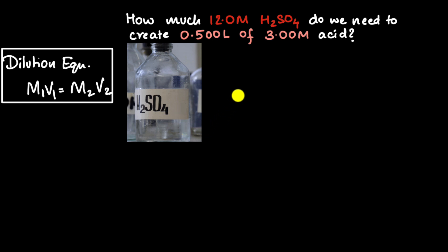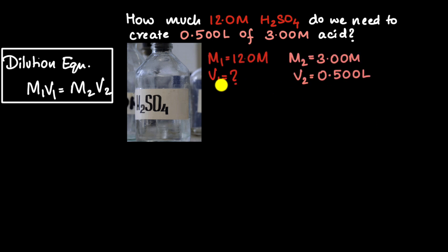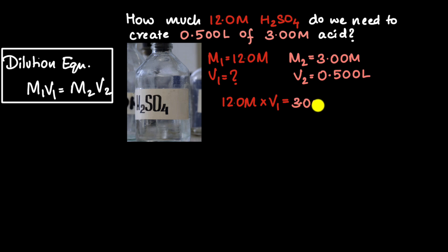Using the dilution equation, M1 is the molarity of the concentrated H₂SO₄, V1 is the volume of the concentrated H₂SO₄ — that's what we need to find. M2 is the molarity of the dilute solution, and V2 is the volume of the dilute solution. We're given M1, M2, and V2, and we need to find V1. Plugging in: M1V1 = M2V2 → 12 × V1 = 3.00 × 0.500.